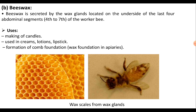Apart from honey, there are many other products produced in apiculture. One is beeswax. Beeswax is secreted by the wax glands located on the underside of the last four abdominal segments of the worker bee. It is used in making candles, in creams, lotions, and lipsticks — largely used in cosmetics. It is used for the formation of comb foundation to build the comb, using wax scales from the wax glands.